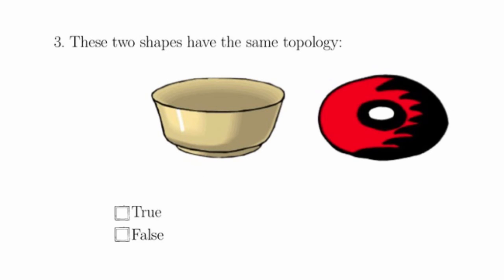Question 3 asks if these two shapes, a bowl and a donut, have the same topology, and this is false. The donut has a hole in it, whereas the bowl does not, so the donut and the bowl have different topologies.